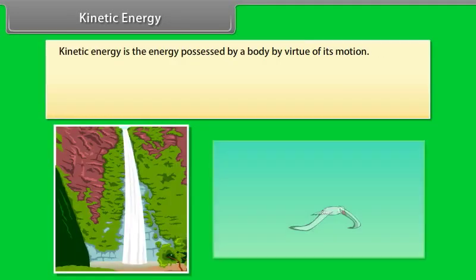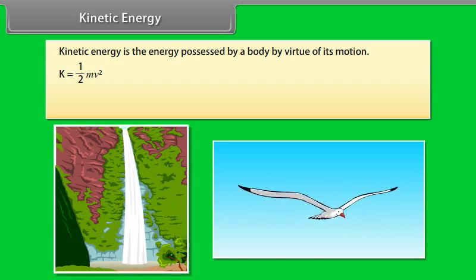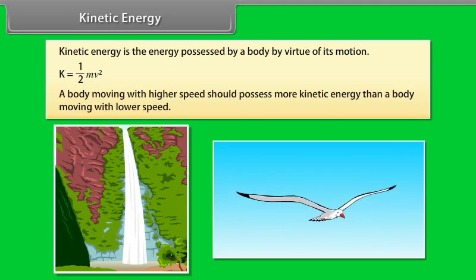Kinetic energy. Kinetic energy is the energy possessed by a body by virtue of its motion. Kinetic energy equals half mv square. Running water, flying bird are few examples of bodies possessing kinetic energy. It is logical that a body moving with a higher speed should possess more kinetic energy than a body moving with lower speed.